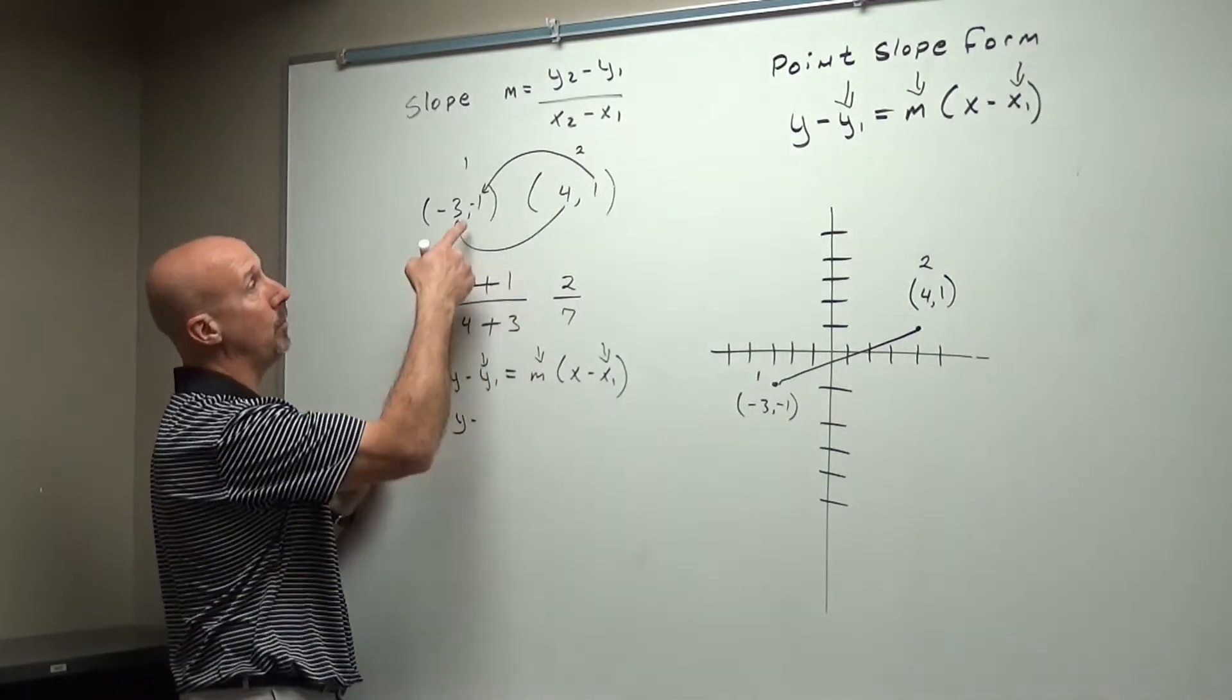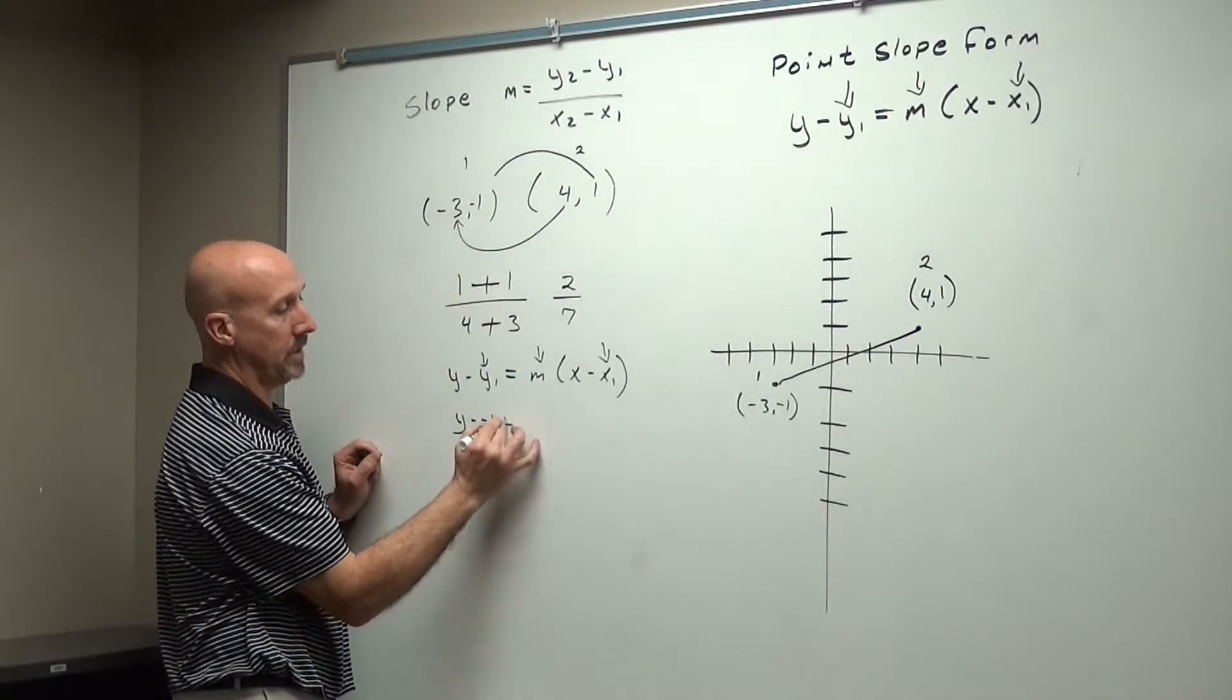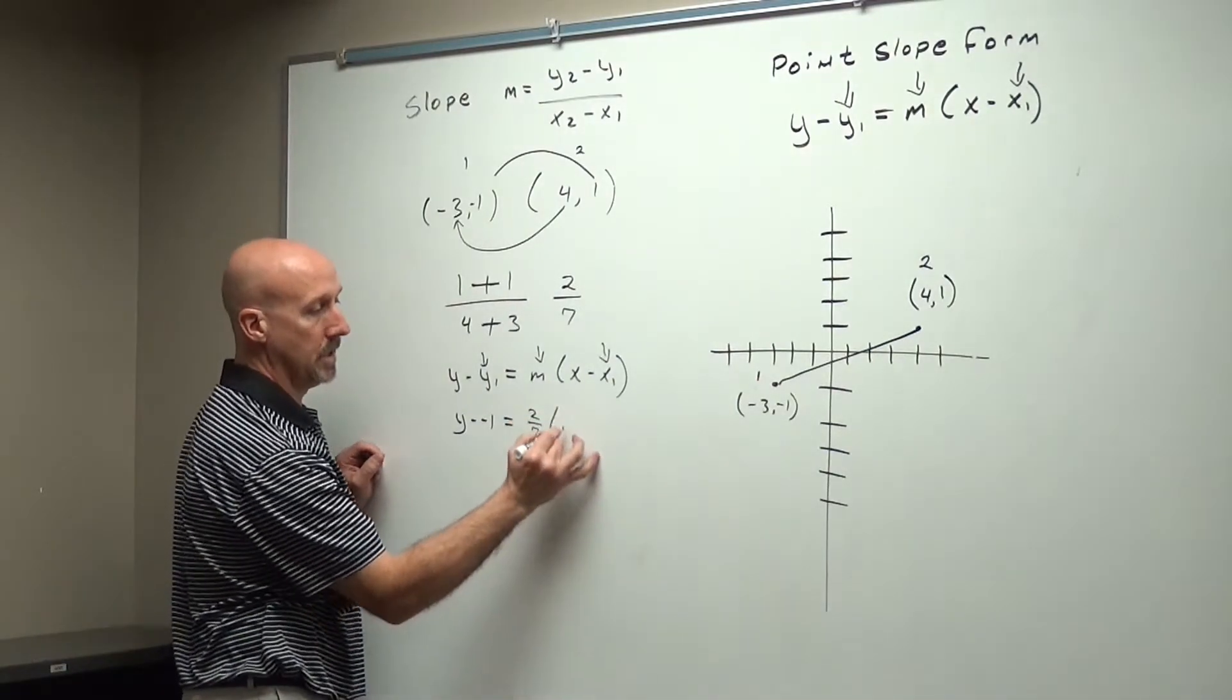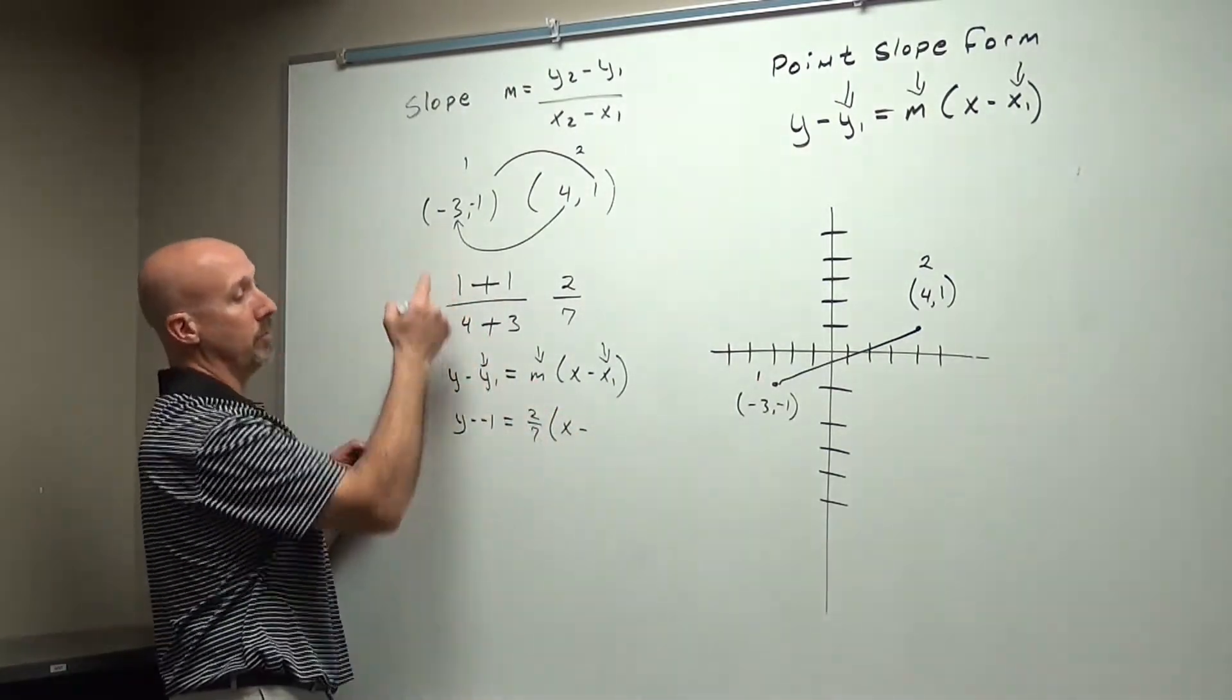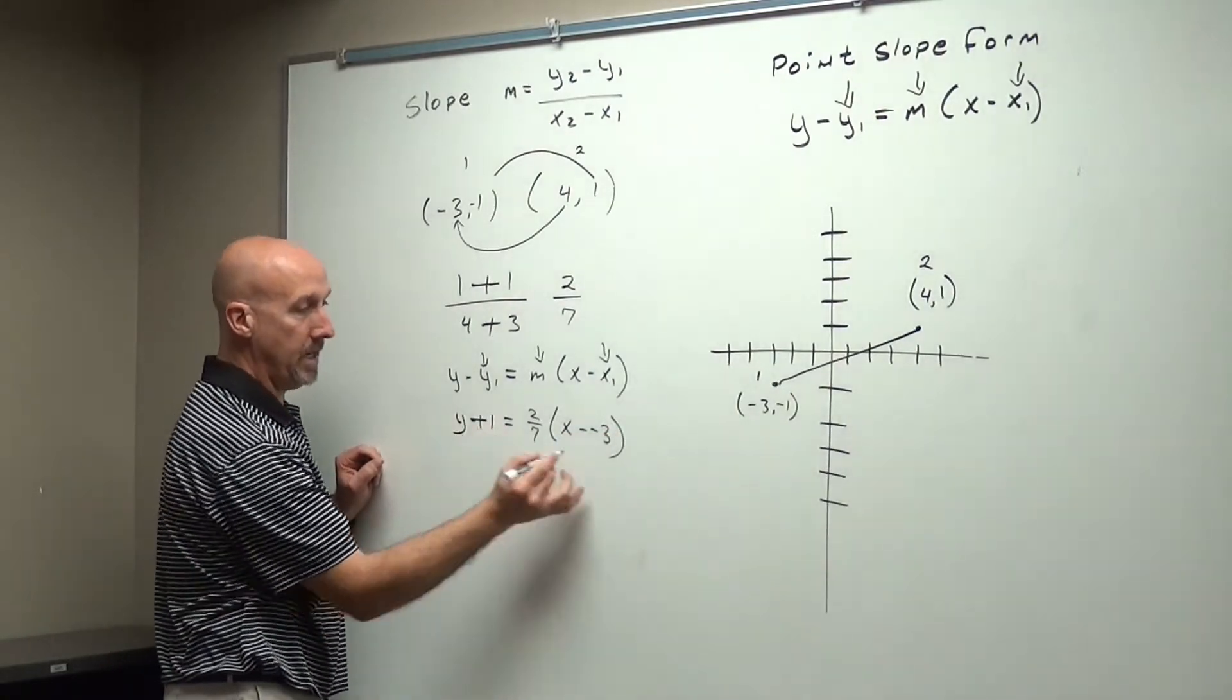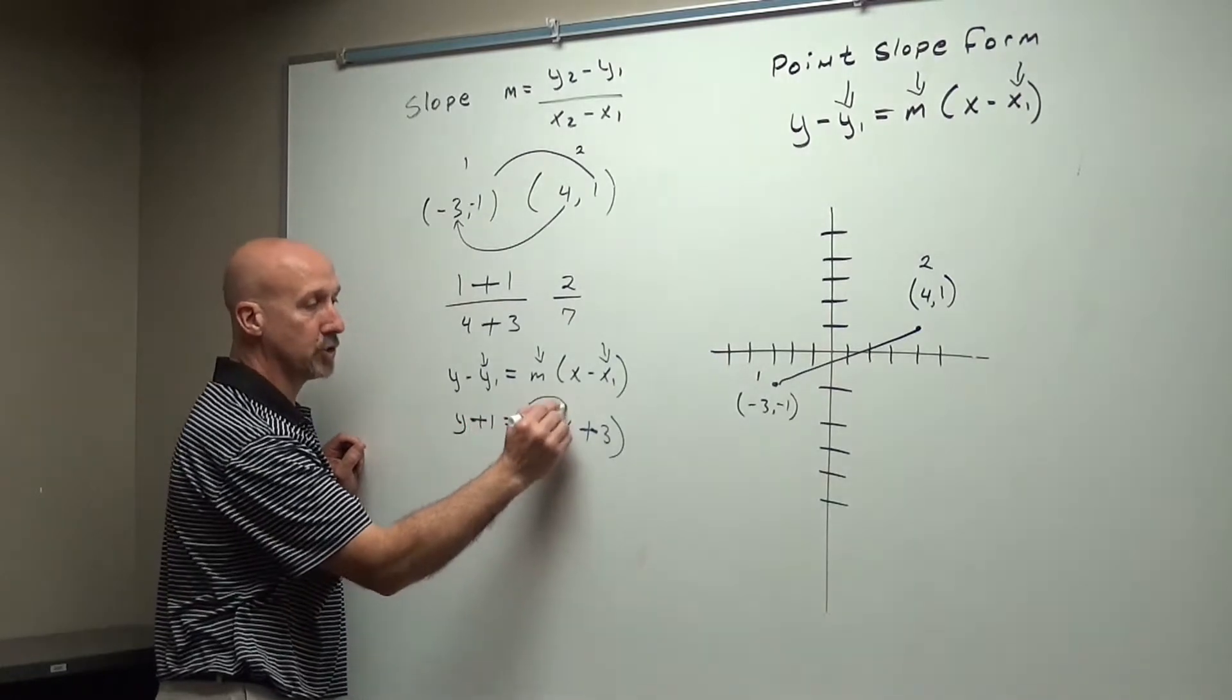and I'm going to plug in these three things right there. So obviously the y doesn't change, because it doesn't have a sub 1 by it. But I'm going to plug in my y, and in this case I'm going to use this. My negative 1 equals my m, which we said was 2 over 7, x minus my x1, which is negative 3. Simplify, get my two negatives to give me a positive.